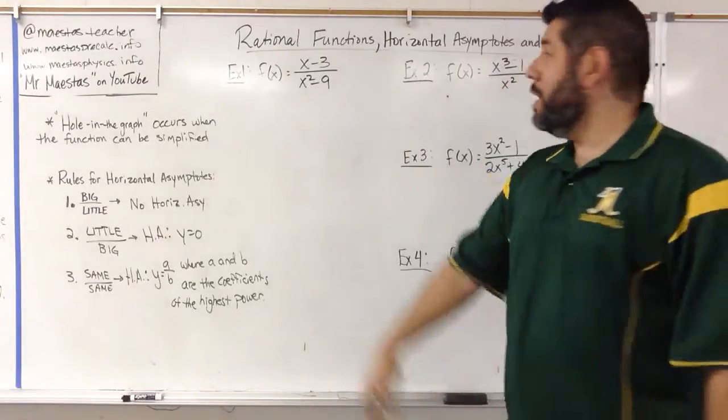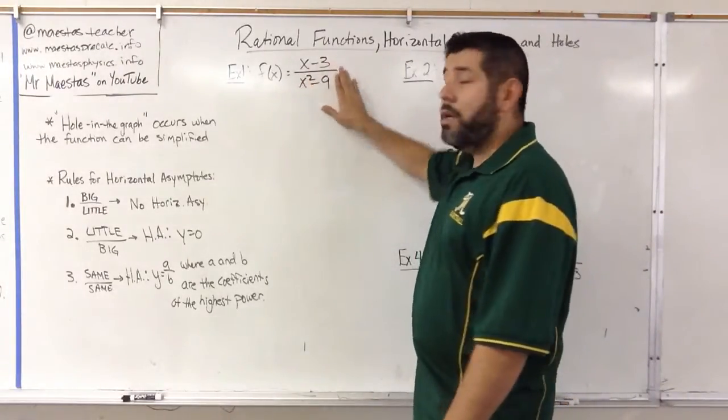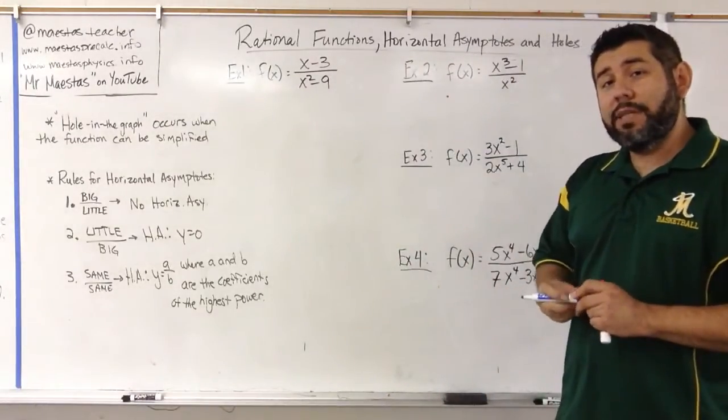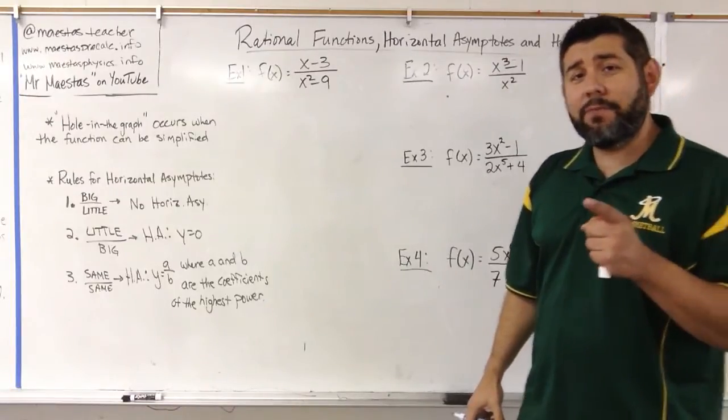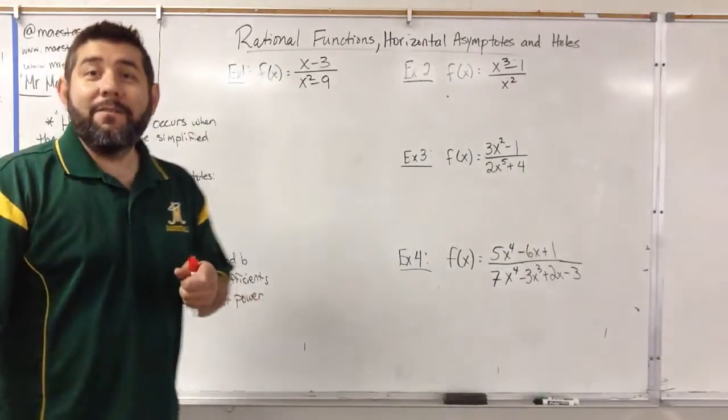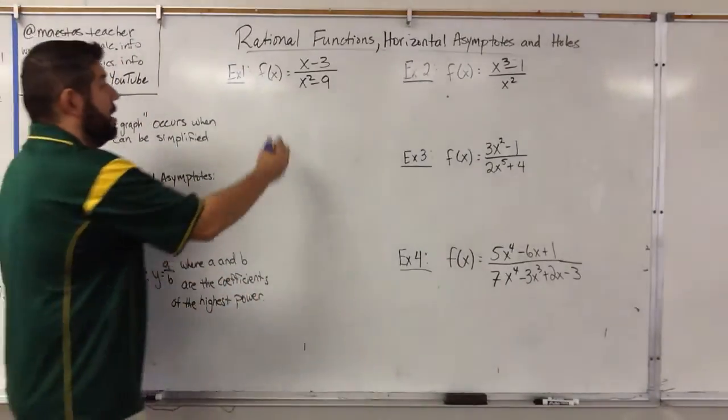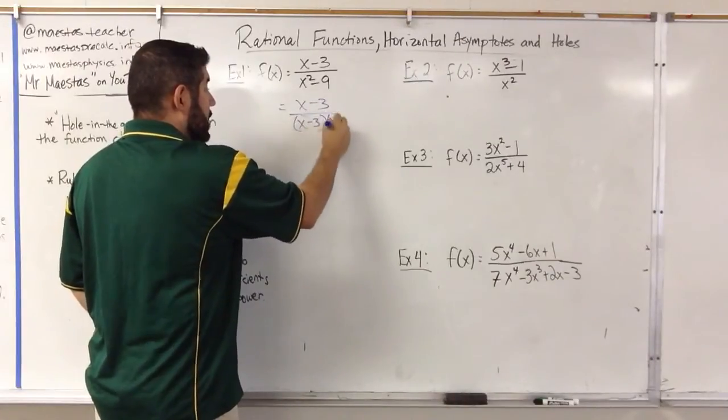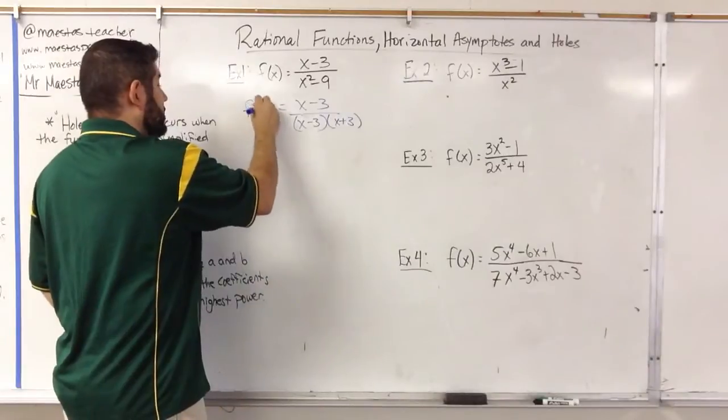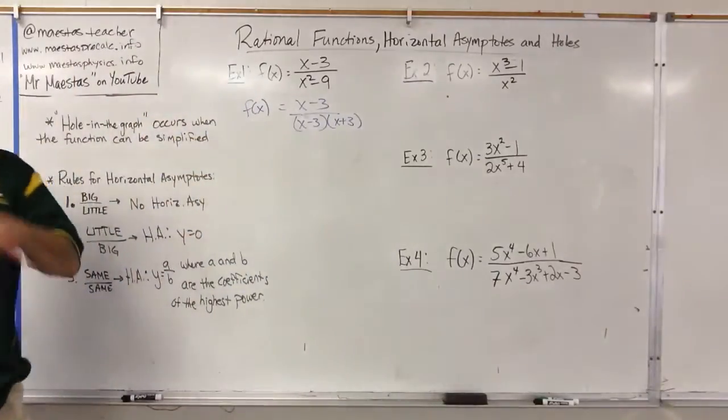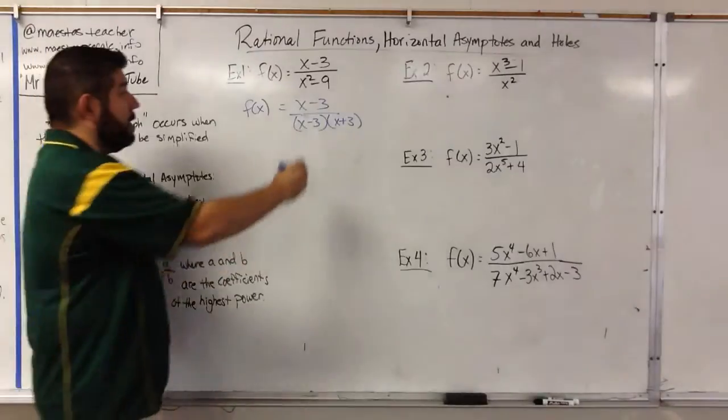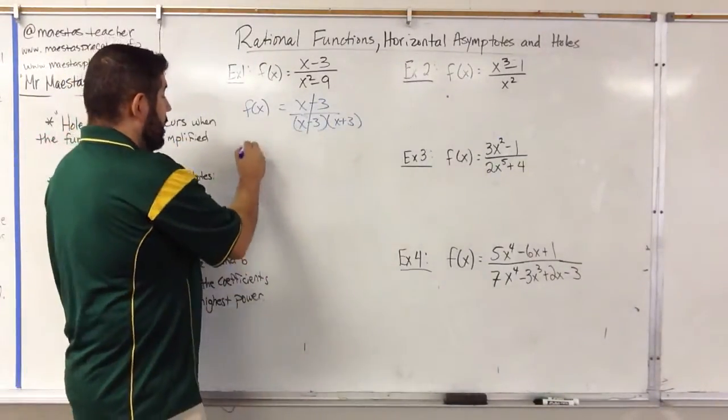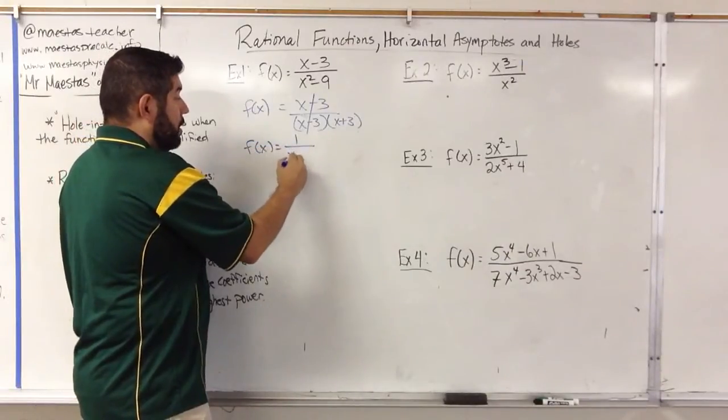Let's take a look at my first example. We have f(x) equals x minus 3 over x squared minus 9. The first thing you should always say to yourself is: can I factor this? The big f word of mathematics is factor. Can I factor it? Well, yes you can. x minus 3 over x minus 3 times x plus 3, using a difference of two squares. Notice here that x minus 3 and x minus 3 simplify out, and I have f(x) equals 1 over x plus 3.